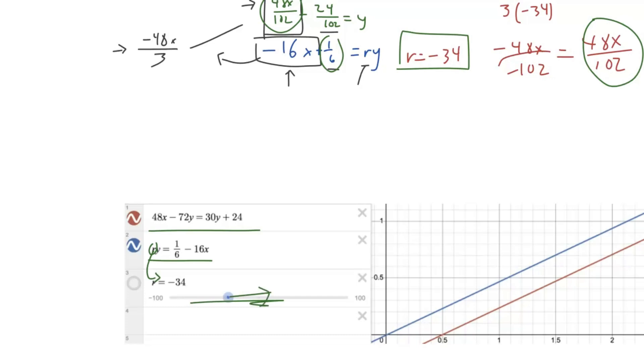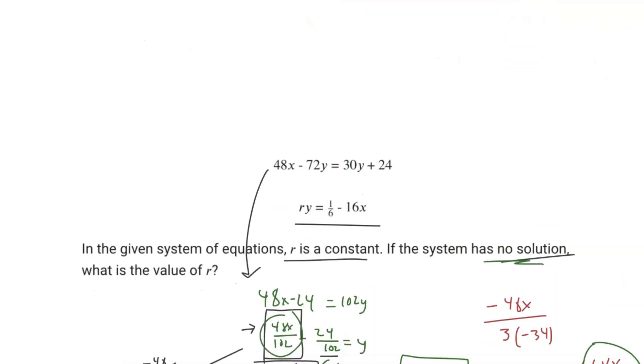Just drag this until those two lines are parallel, until those two lines don't intersect. That is your value of r. That is the value of r that satisfies the equation when there is no solution.